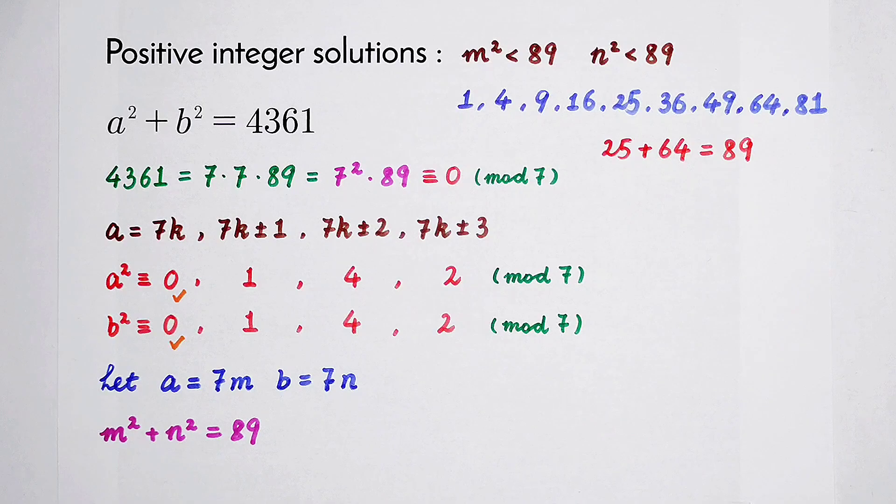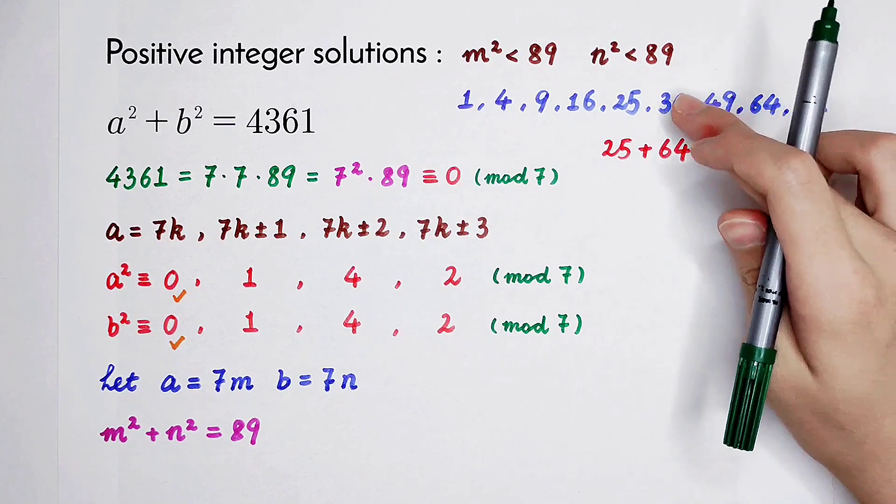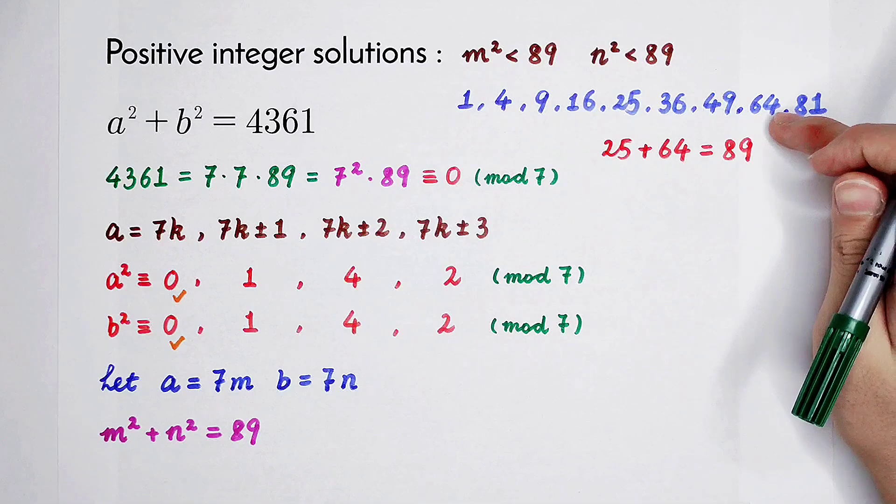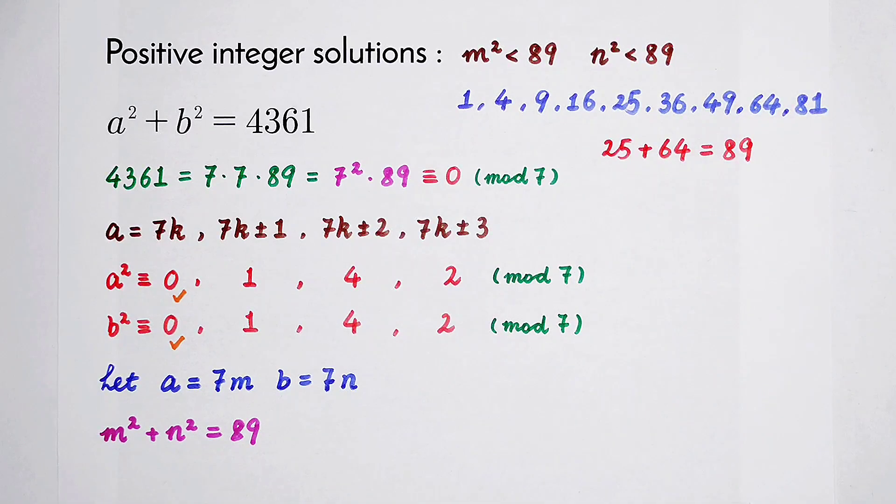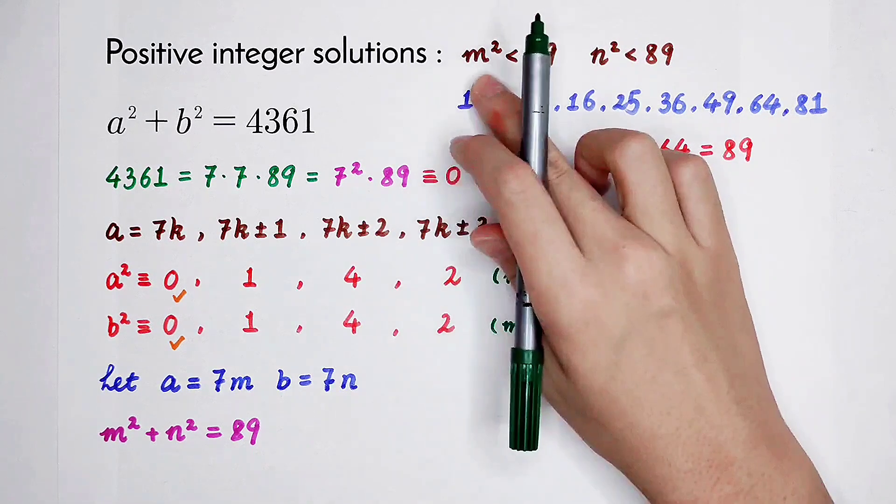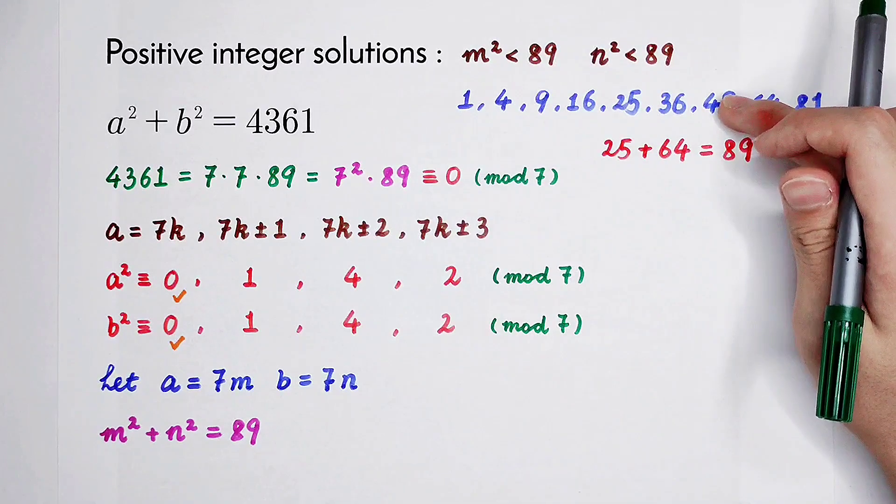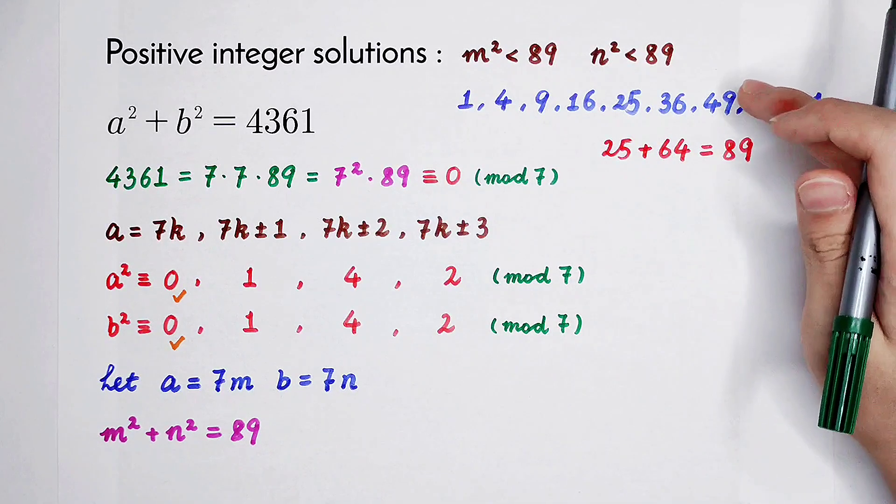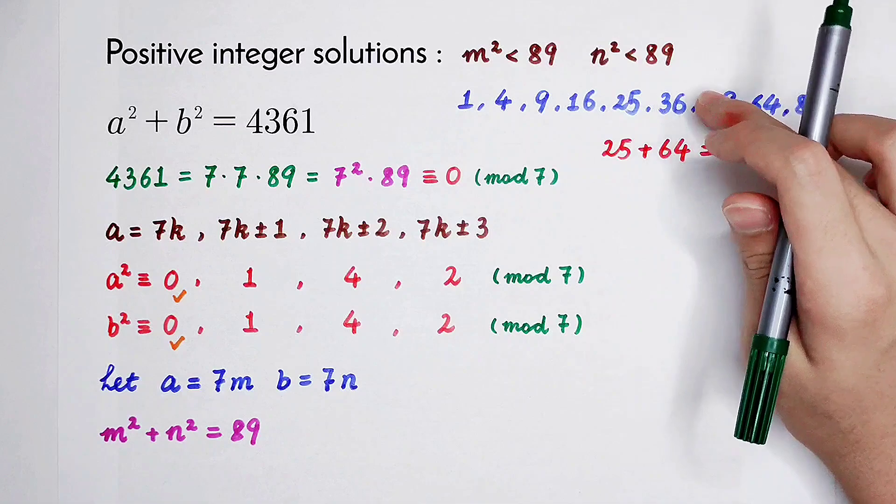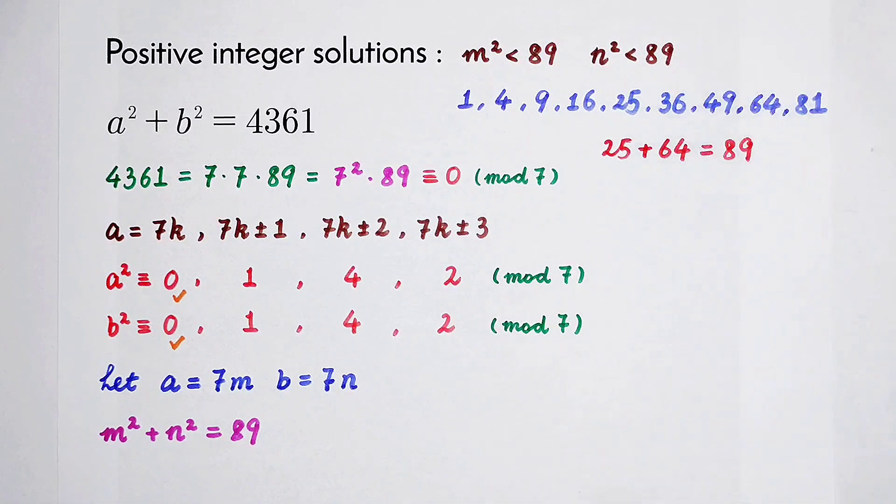Are there any other pairs? 64 plus 36? No, it is bigger than 89. And if the largest number of m squared and n squared is 49, you can find that 49 plus 36 is less than 89. So we don't have to check other cases. This is the only one.